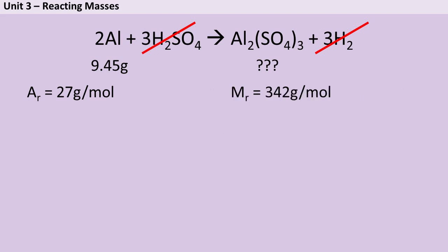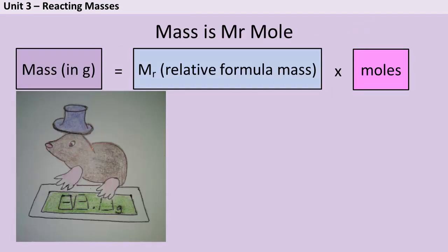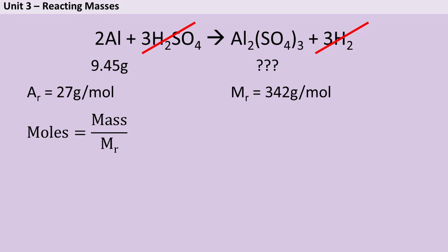So once I've got both of those relative masses, I can start using my favourite chemistry equation, mass is MR × mole, to work out how many moles of aluminium I have. So the mass given to me in the question was 9.45 grams. And the relative mass, which in this example is strictly speaking an AR rather than an MR, is 27. So I do 9.45 divided by 27, and I find out that that gives me 0.35 moles of aluminium.